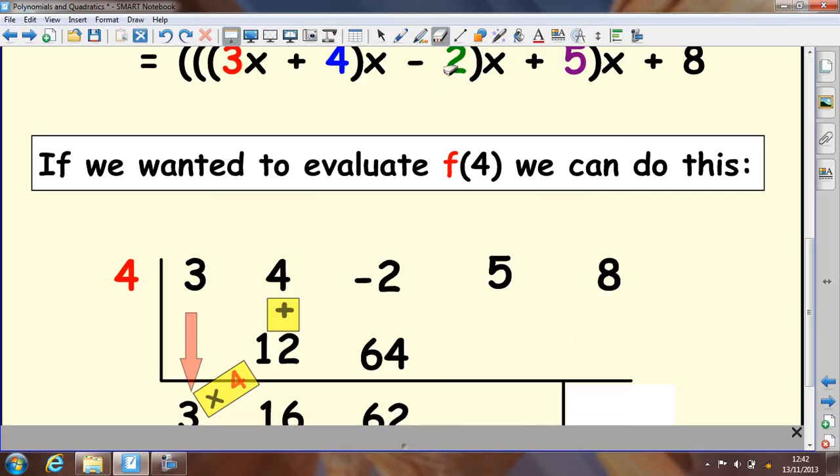Again, after you've done all that, you would multiply it by x again. So, you multiply it by 4: 248. Then you would add on the 5. So, add these two together and you get 253.